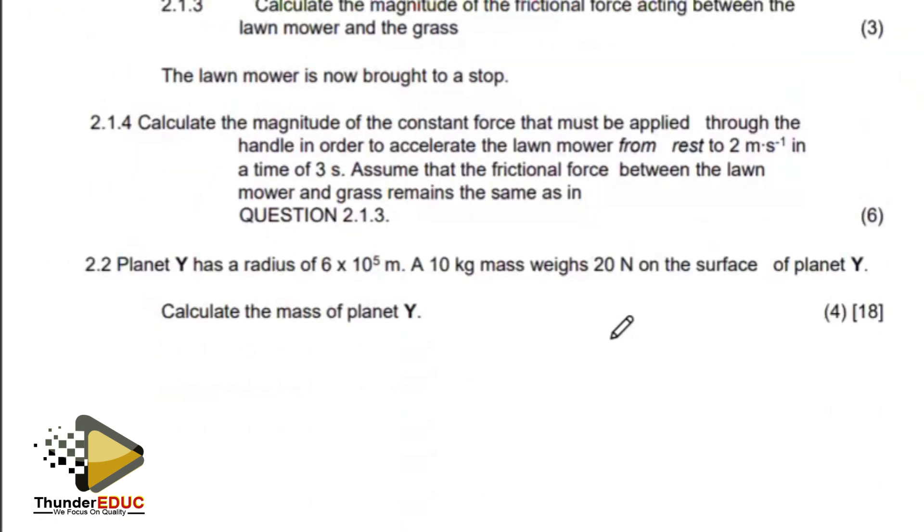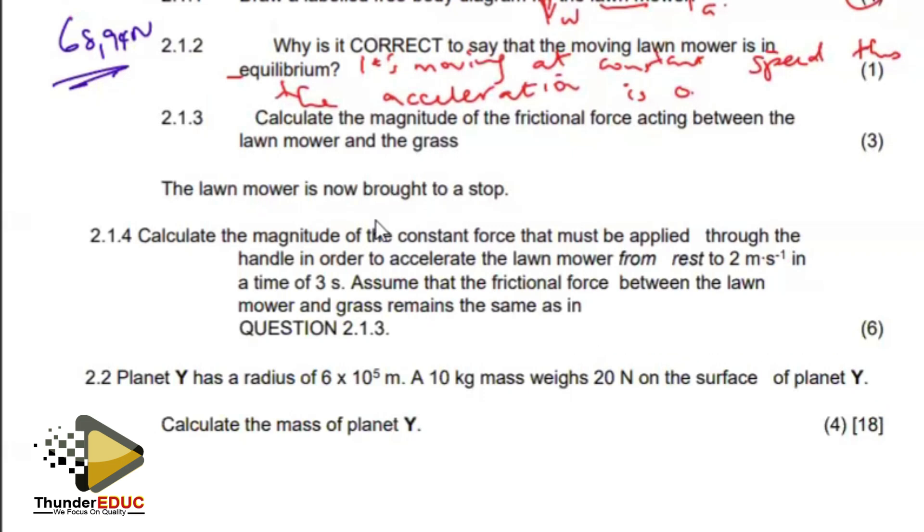Then they're telling us that the lawnmower comes to a stop. Calculate the magnitude of the constant force that must be applied through the handle in order to accelerate the lawnmower from rest after two meters per second in a time of three seconds. We have V initial at zero, final velocity is two meters per second, and then within a time of three seconds. Assume that the frictional force remains the same as 68.94.